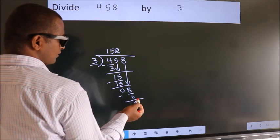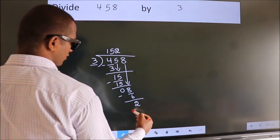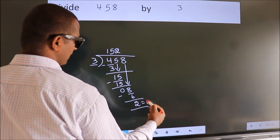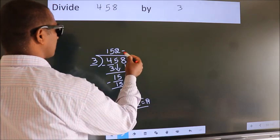No more numbers to bring it down. So we stop here. This is our remainder. This is our quotient.